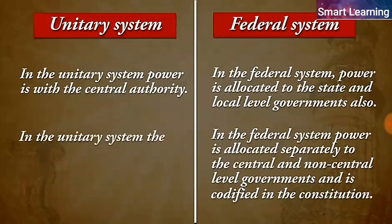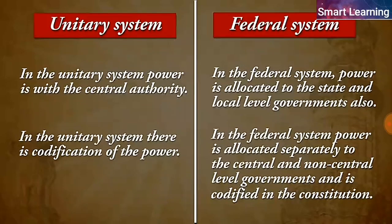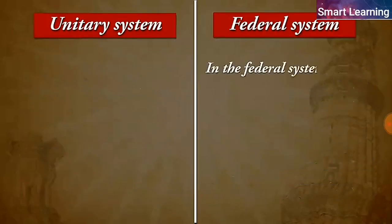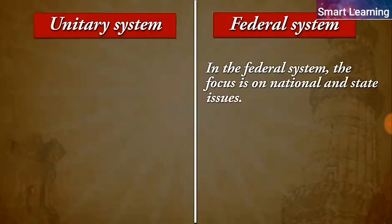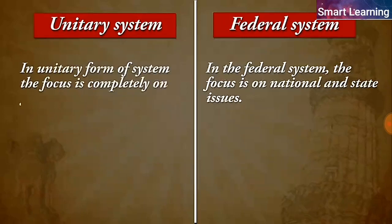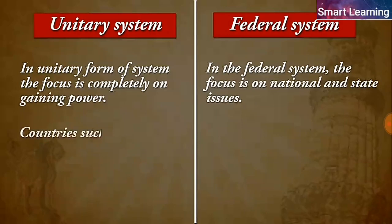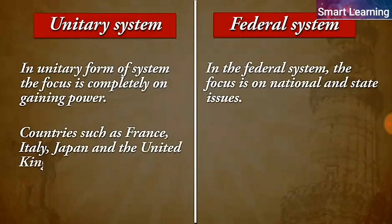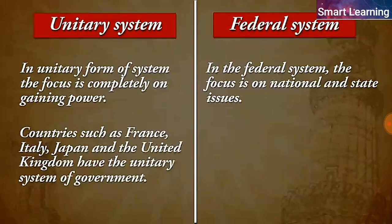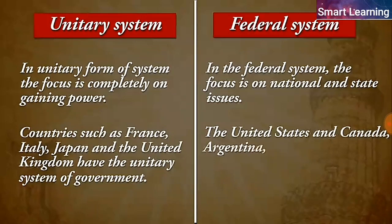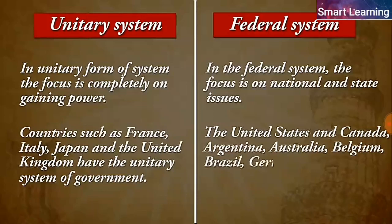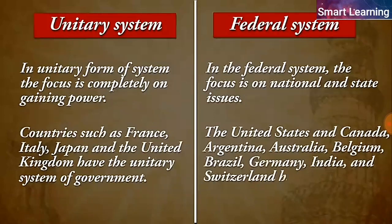In the unitary system there is codification of power. In the federal system the focus is on national and state issues, while in the unitary system the focus is completely on gaining power. Countries such as France, Italy, Japan and the United Kingdom have the unitary system of government. The United States, Canada, Argentina, Australia, Belgium, Brazil, Germany, India and Switzerland have the federal system of government.